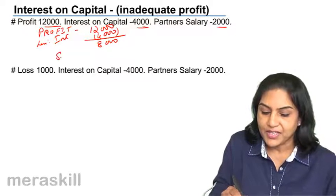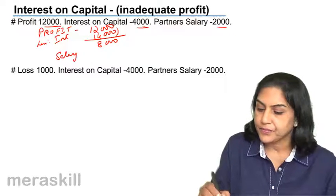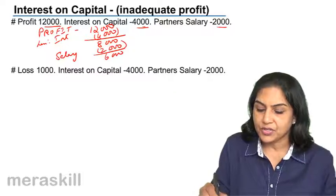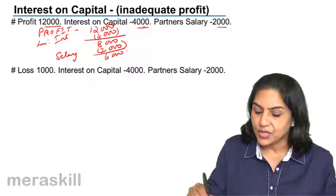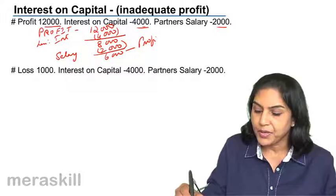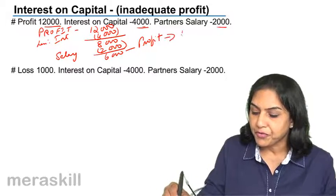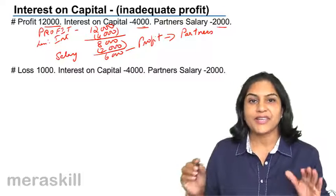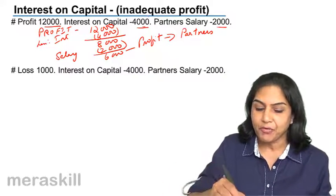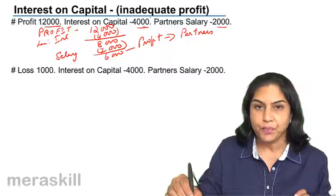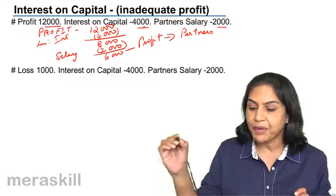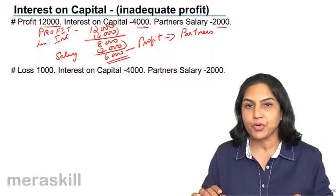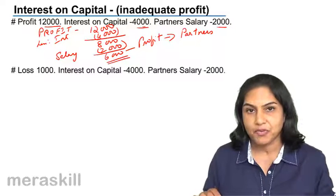We give salary of 2,000 and we have a balance of 6,000. This 6,000 is the profit which will be distributed to partners. So there is adequate profit: you pay interest on capital of 4,000, you pay salary of 2,000 — total of 6,000 — and there is a balance of 6,000 which is distributed to the partners in their profit sharing ratio.